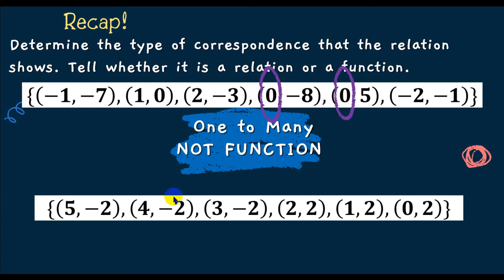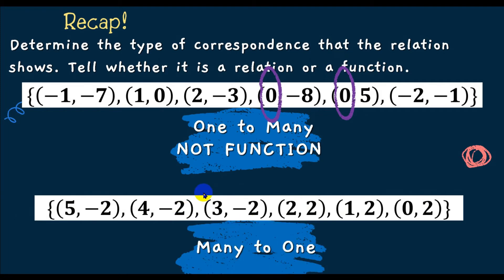Another set of ordered pairs: (5, negative 2), (4, negative 2), (3, negative 2), (2, positive 2), (1, positive 2), (0, positive 2). Looking at the x-coordinates: 5, 4, 3, 2, 1, 0 — no repeats. The correspondence is many-to-one, so this is a function. Even though the y values repeat, we don't care about y — only x coordinates matter.